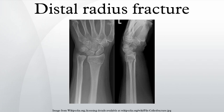A distal radius fracture is a common bone fracture of the radius in the forearm. Because of its proximity to the wrist joint, this injury is often called a wrist fracture. Treatment is usually with immobilization, although surgery is sometimes needed for complex fractures.